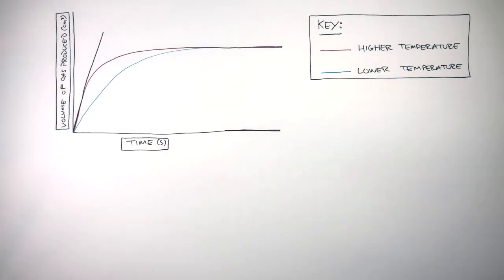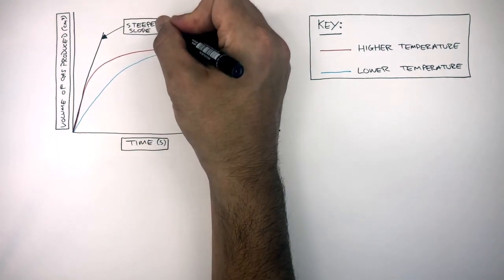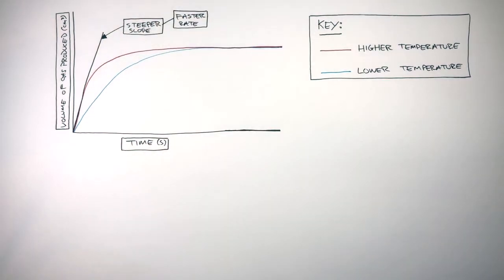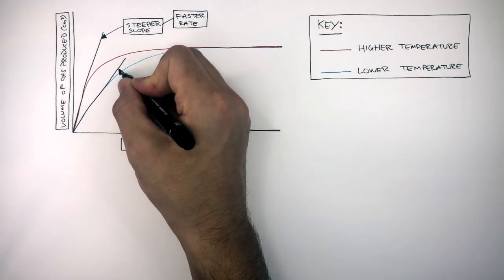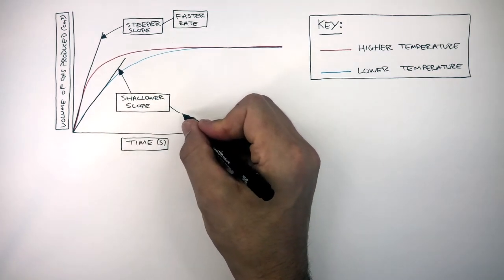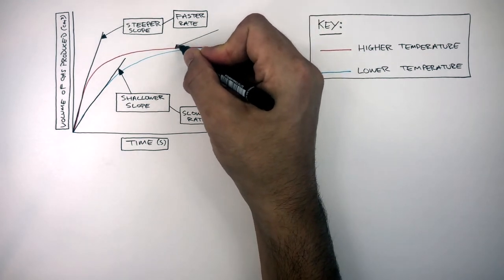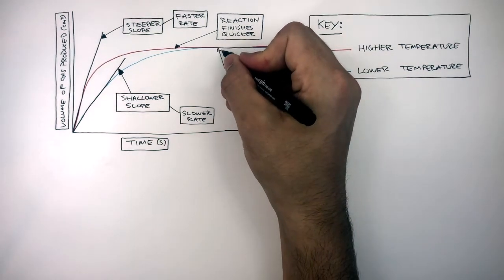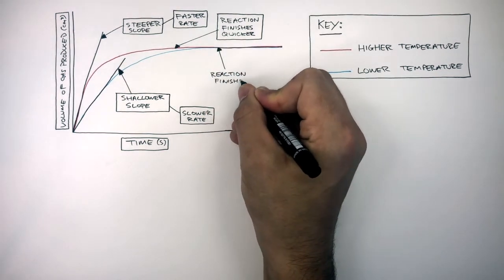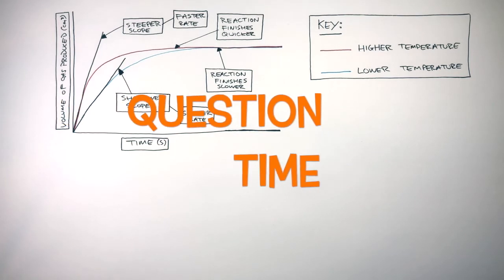This tangent of the initial rate of reaction for the higher temperature is steeper, showing it has a faster rate of reaction. Whereas this tangent for the initial rate of reaction for the lower temperature has a shallower slope, showing how it has a slower rate of reaction. We can see here the higher temperature finishes quicker, as the line becomes horizontal before the blue line. Whereas the lower temperature reaction finishes slower, as the rate of reaction is slower.